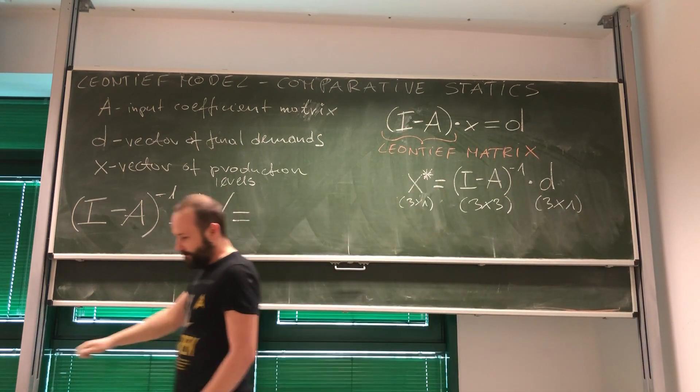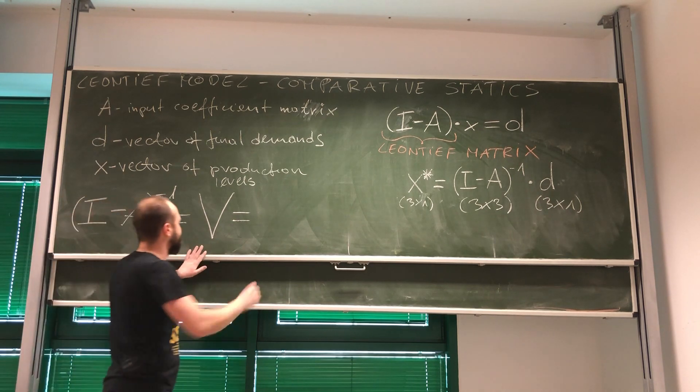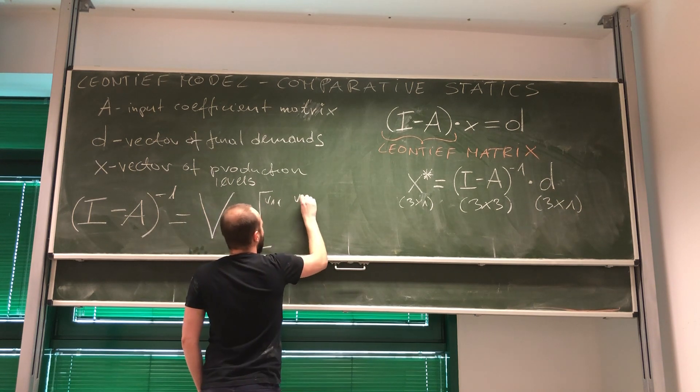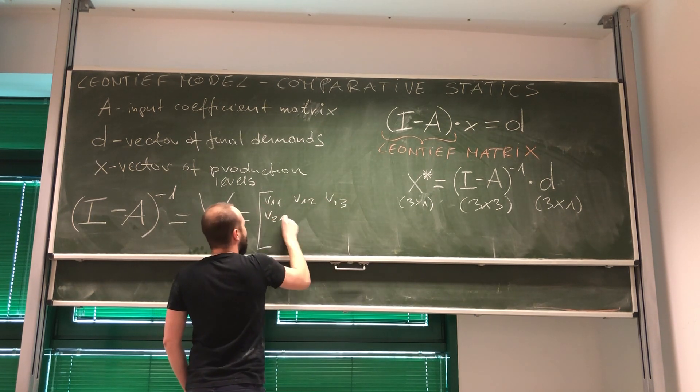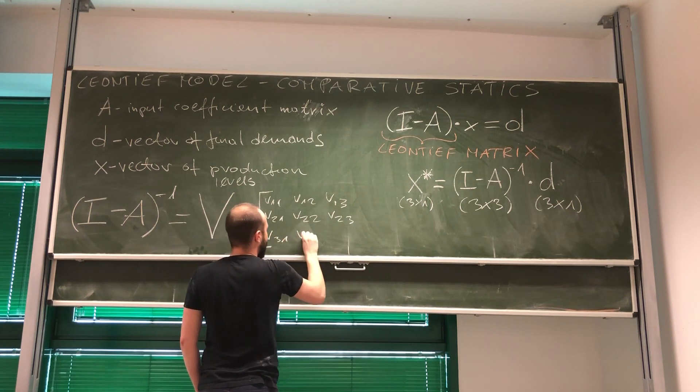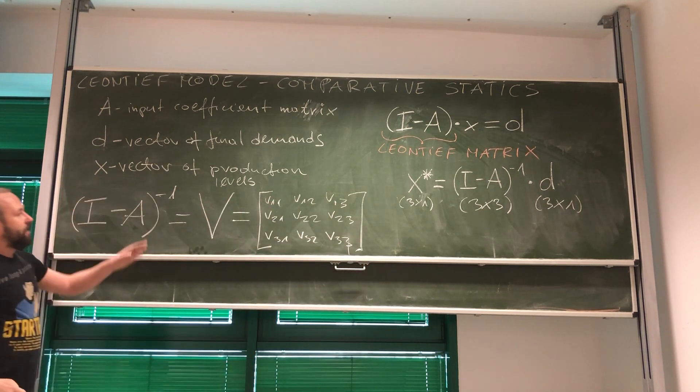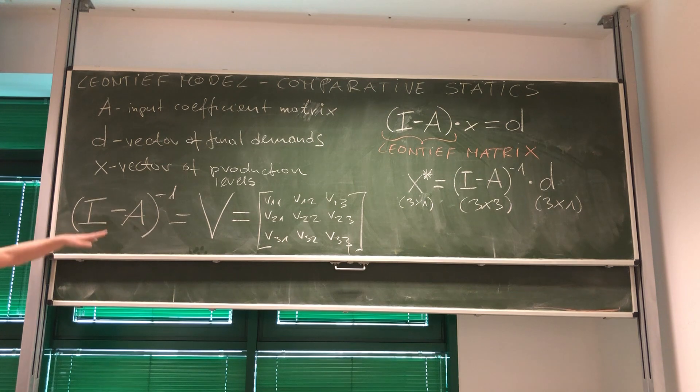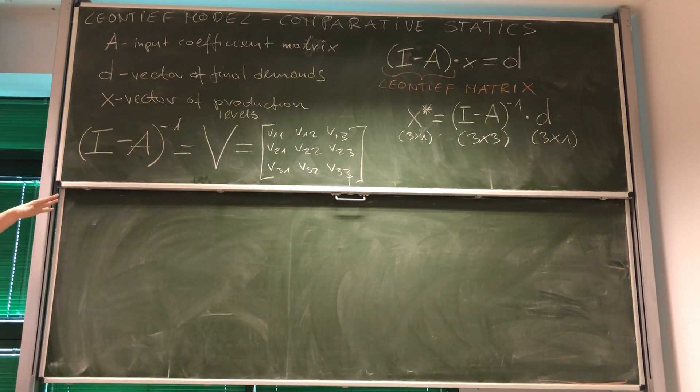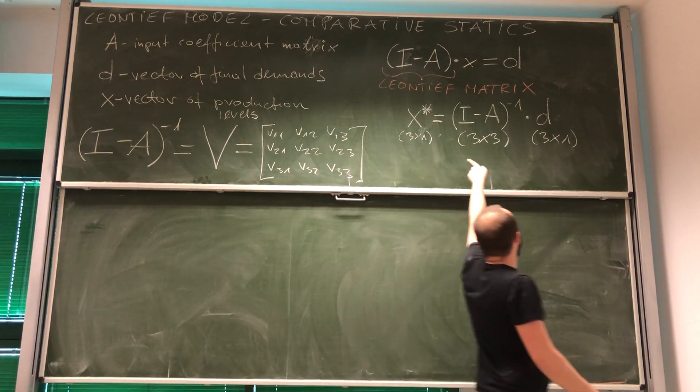So, let's say that each element of inverted relative matrix V is given by V1 1, V1 2, V1 3, V2 1, V2 2, V2 3, V3 1, V3 2, V3 3. And let's just say that we've calculated. Look what happens when we actually substitute this solution over here.